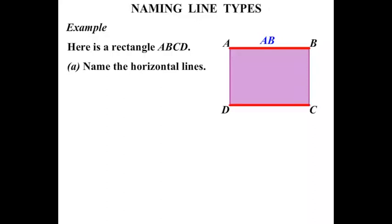And this line here, from D to C, so we call that line DC. So the two horizontal lines are AB and DC.